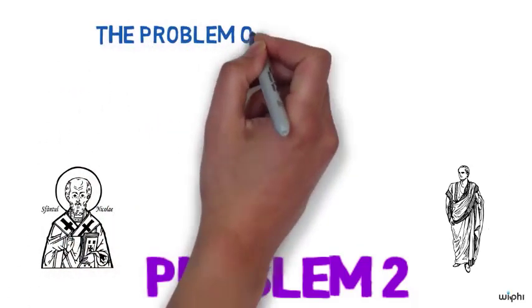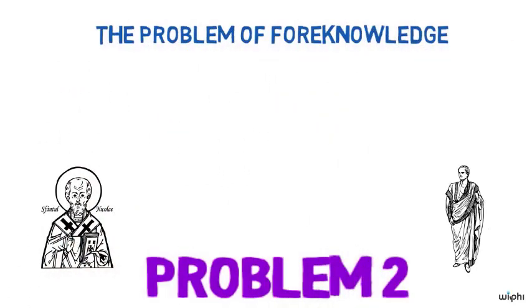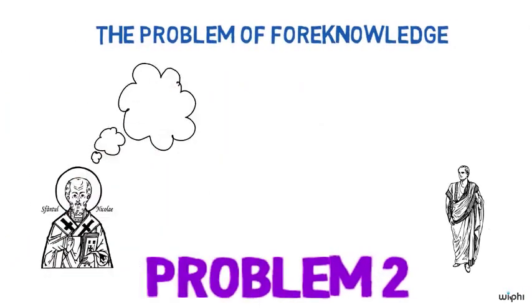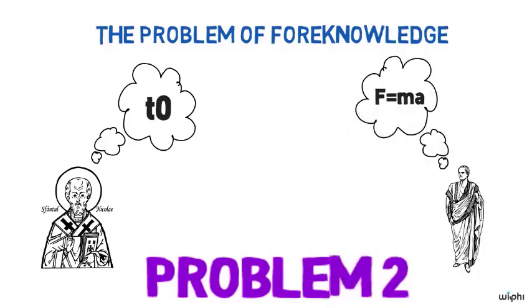So this is the problem really of foreknowledge, that is, if things are determined in the way we talked about before, then if we know the initial conditions and we know the laws of nature, then it looks as though we'll be able to predict everything that happens.